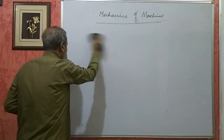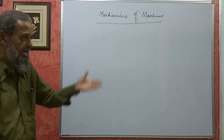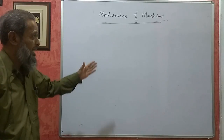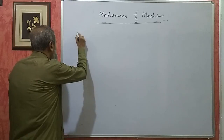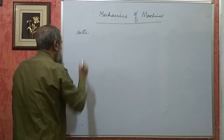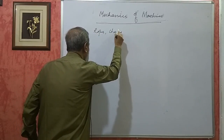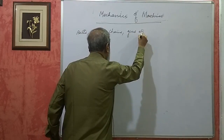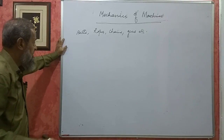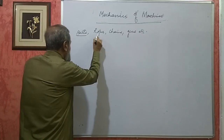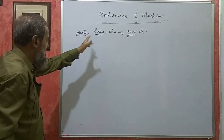Just as there are different modes of transportation — by road, by air, by rail — mechanical power can be transmitted from one place to another by different means like belts, ropes, chains, gears, etc. In your syllabus, we have transmission by belts, by ropes, and by gears — these three we have.